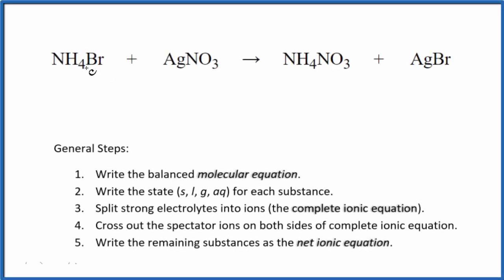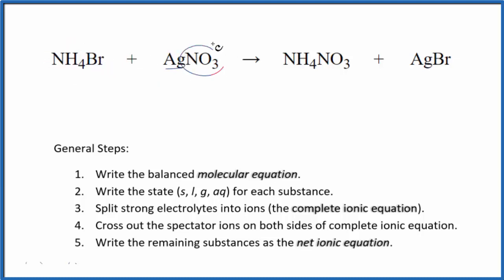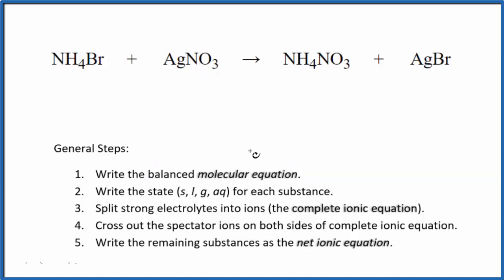In this video, we'll write the balanced net ionic equation for NH4Br plus AgNO3 — that's ammonium bromide plus silver nitrate. The first thing we need to do with net ionic equations is balance the molecular equation. In this one, it's already balanced, so we're done there.